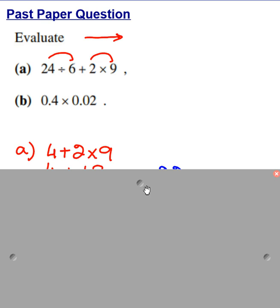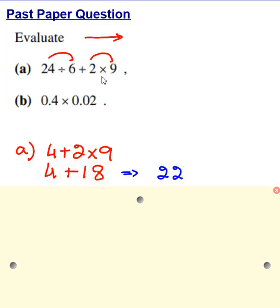This is what I have done here. You can see 24 divided by 6 is 4, and I have just written here one extra step, not needed, and 9 times 2 is 18. So 4 plus 18 is 22.